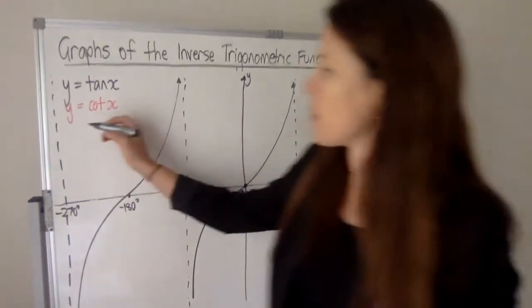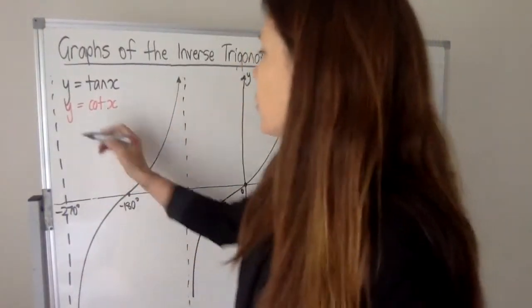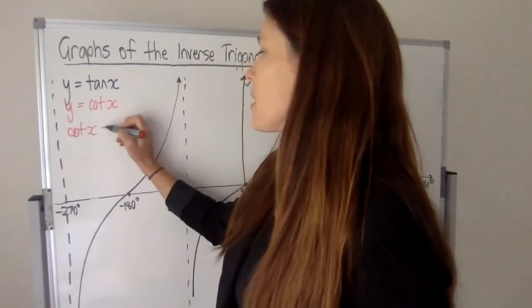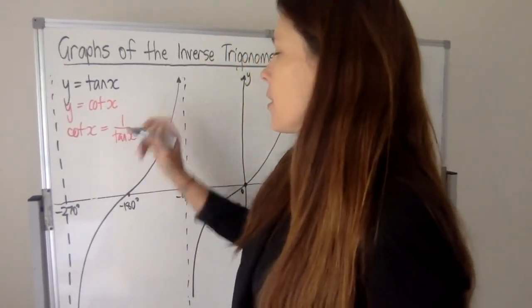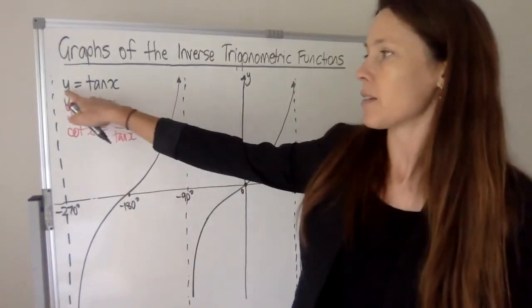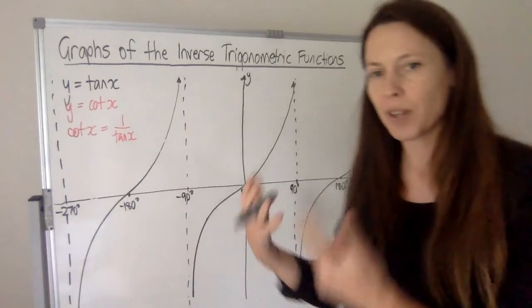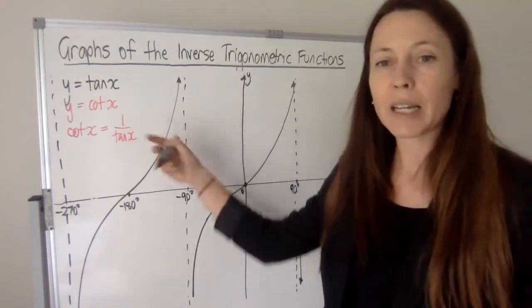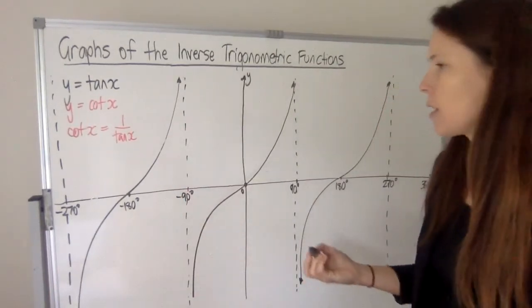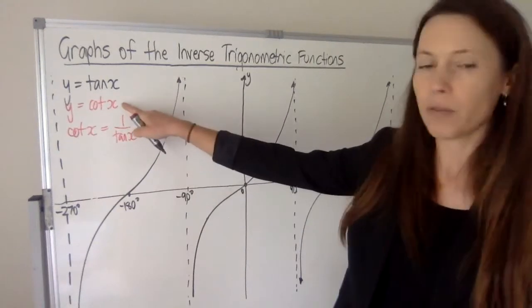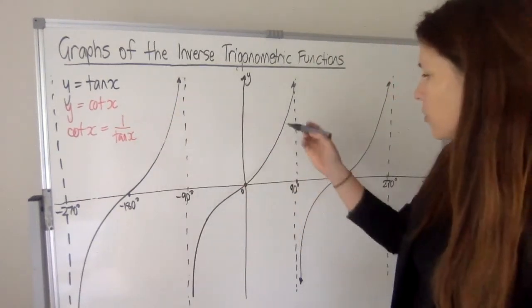Now, if we remember that cot x means 1 over tan x, then we can take any value of tan x on the black curve - in other words, any value of y - tip it upside down, find the reciprocal, do 1 divided by it. They're all the same thing. And that will give us a curve y equals cot x, which we'll do in red now.